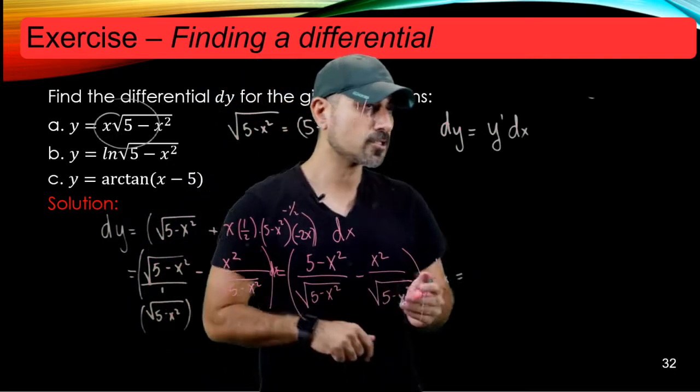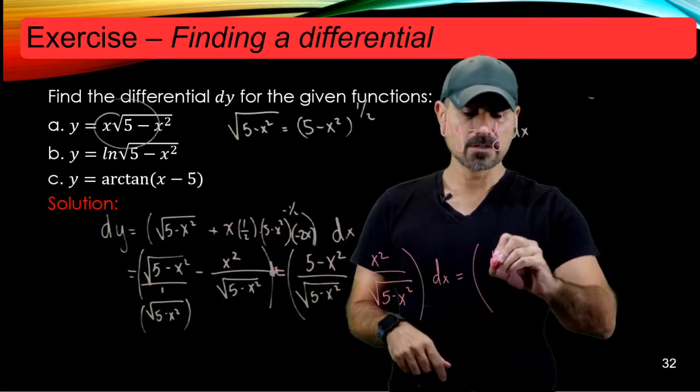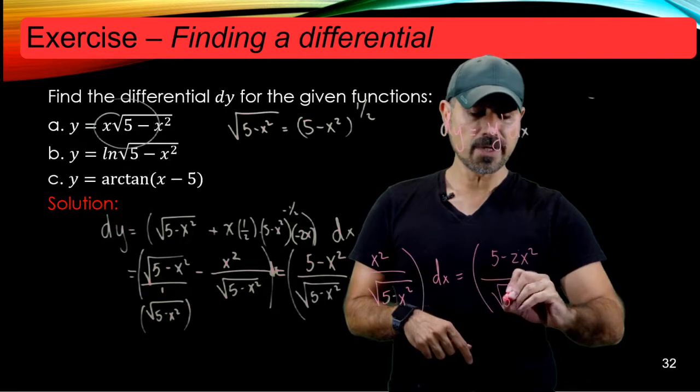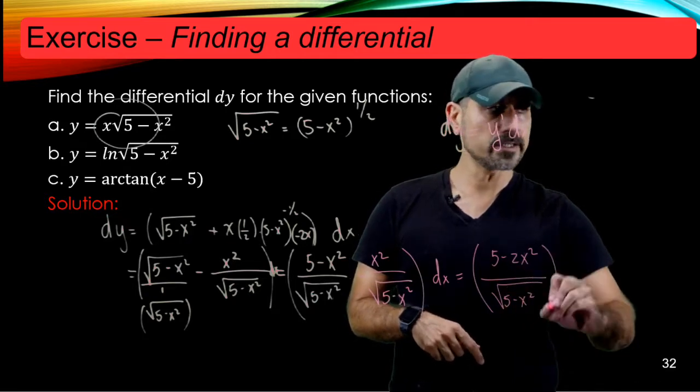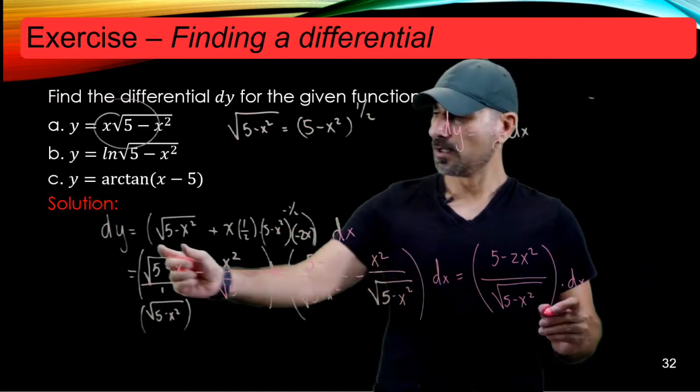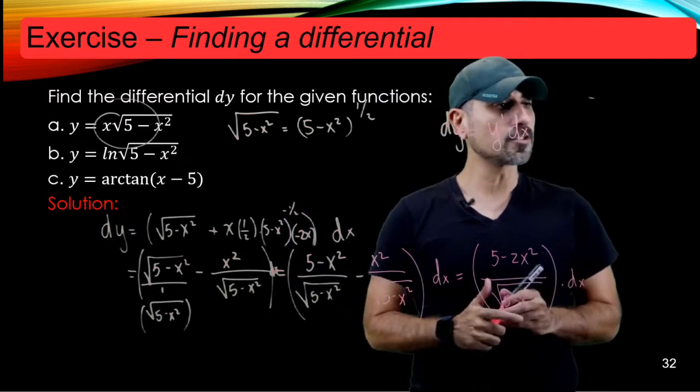Alright, the final shot here is just to combine the tops here. So you have 5 minus 2x squared divided by radical 5 minus x squared times the dx. So this is the differential of y written in terms of the differential of x.